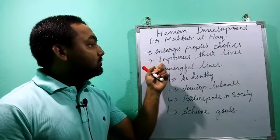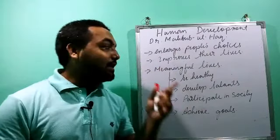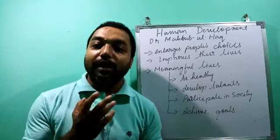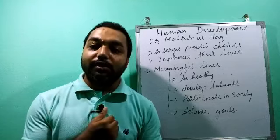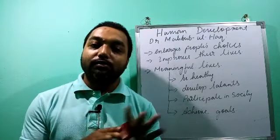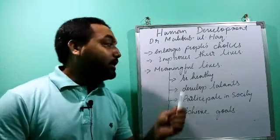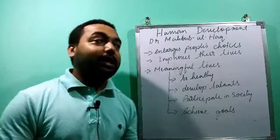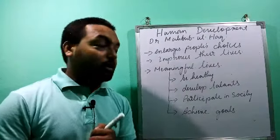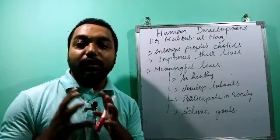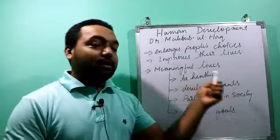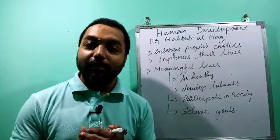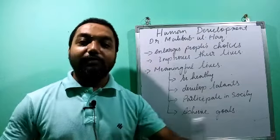Second, development should improve the lives of people by providing them good jobs, good health facilities, good houses to live in, and good education. When a country provides all these to its population, human development will take place. According to Dr. Mahbub ul Haq, the two important things for human development are: first, enlarging people's choices, and second, improving their lives. Next is leading a meaningful life — human development means people should lead a meaningful life.